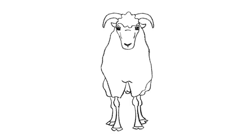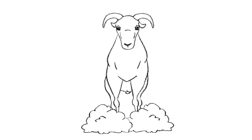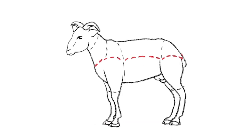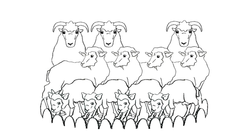Domesticated sheep do not naturally shed their wool, so first we would shear him, then kill him, then eat or sell him. Most of the basic procedures and objectives in sheep slaughter are similar to those of other meat species. Without the leader, separating the herd by sex and removing the lambs from their mothers is easy.